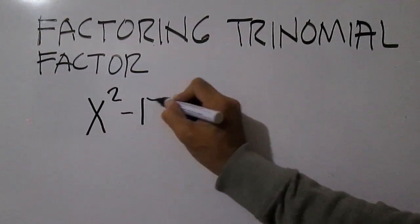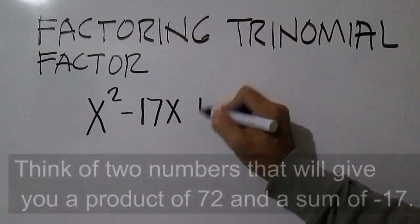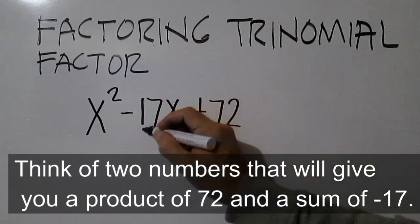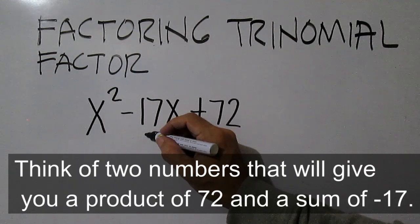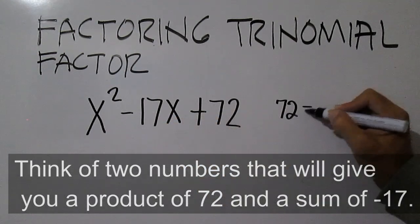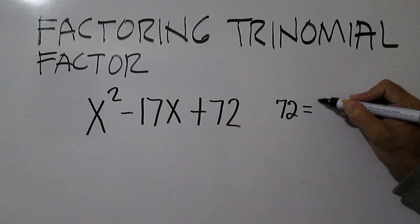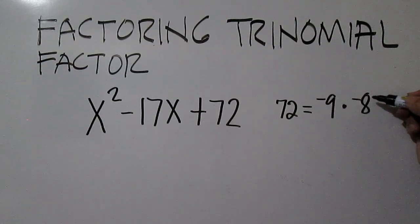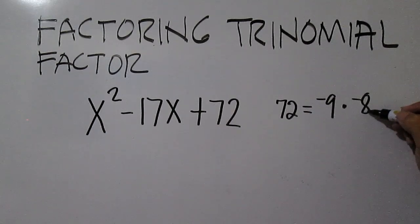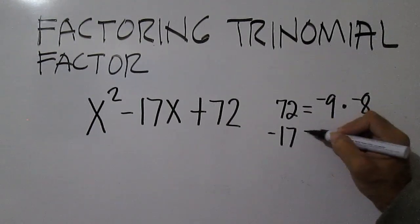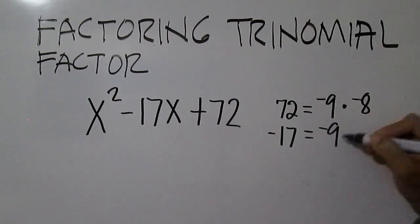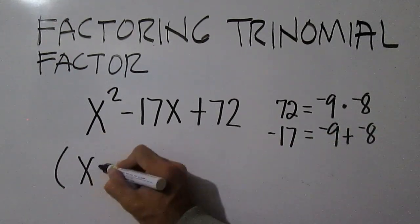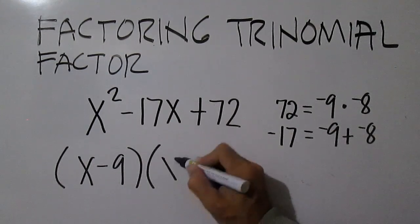Factor x squared minus 17x plus 72. Think of two numbers that will give you a product of 72 and a sum of negative 17. 72 is equal to negative 9 times negative 8. Negative 17 is equal to negative 9 plus negative 8. The factors are x minus 9 times x minus 8.